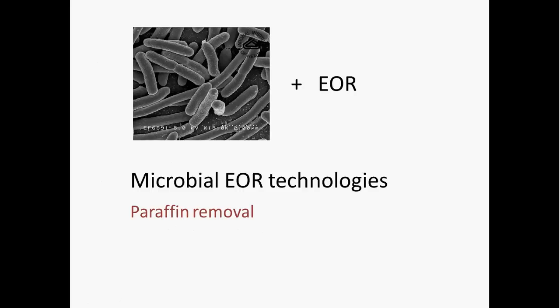The first example is using microorganisms to help remove paraffin that accumulates on the surfaces of production infrastructure. Paraffin is a waxy compound — one example is petroleum jelly — it is found in petroleum and exists as a liquid when warm, but as crude oil cools it can solidify and coat surfaces, making it harder to produce oil and kind of gumming things up. Apparently there are microbes that can degrade paraffin and remove it from these surfaces. Microbial paraffin removal has survived in the marketplace for many years and there are published results that support its effectiveness.